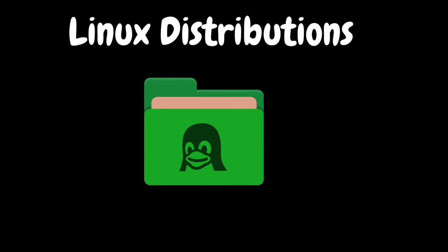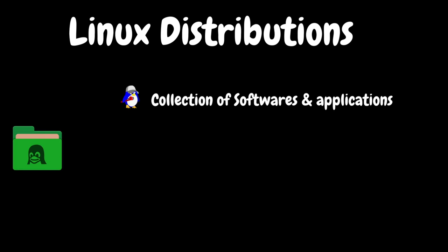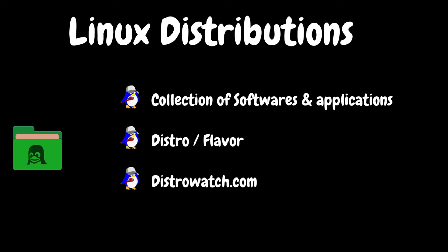During the Linux discussions, we may hear the term called distributions. Linux distribution means the collection of softwares and applications packaged together in a way that makes it easy to install and use. Each distribution may have its own unique features, user interface, package management system, and default applications catering to different needs and preferences. For example, one Linux distribution may come with one particular web browser while another may come with a different web browser by default. This is also referred to as distro or flavor. We can find all the available different distributions at distrowatch.com.